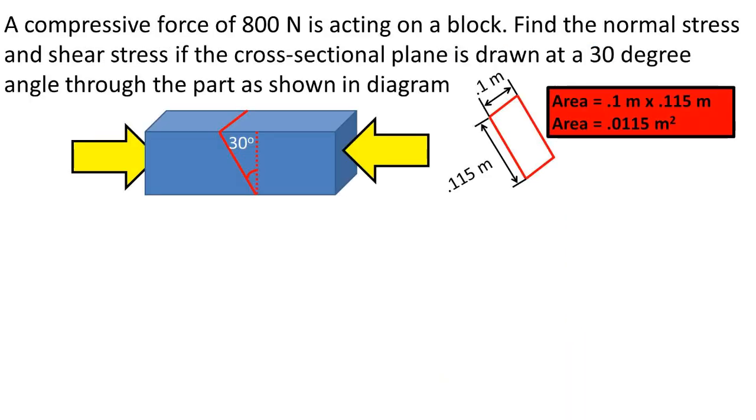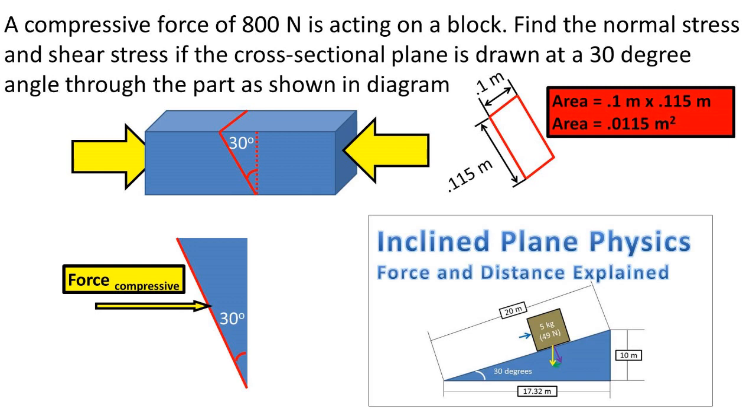The first step of this problem is to find the area of the plane. The plane has an area of 0.1 by 0.115 meters. Plugging this into our calculator, we get an area of 0.0115 meters squared. Now we can think back to the object on inclined plane problem that we previously completed.